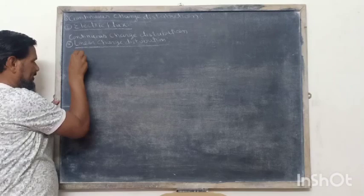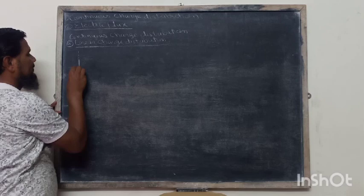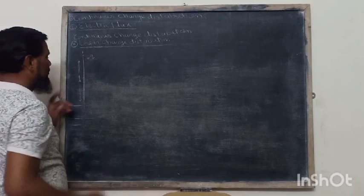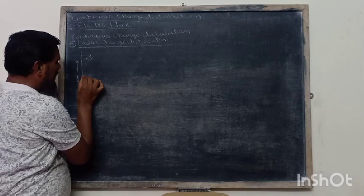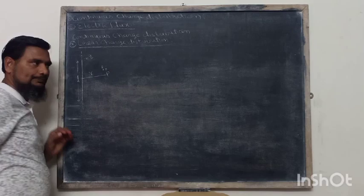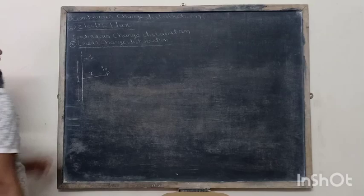In linear charge distribution, we consider an infinitely long wire of infinite length, in which we consider a length L of wire, and a charge Q is distributed along that length L. The charge is uniformly distributed along its entire length L. We consider a point P at distance R where we place a point charge Q0, and we shall calculate the Coulomb force at this point due to this line charge.